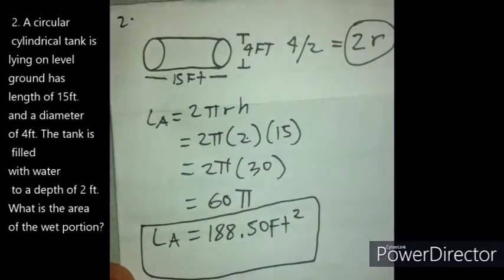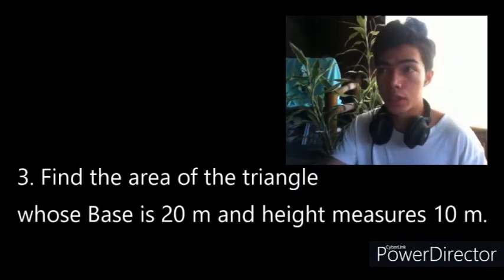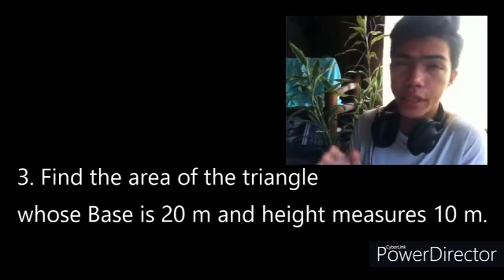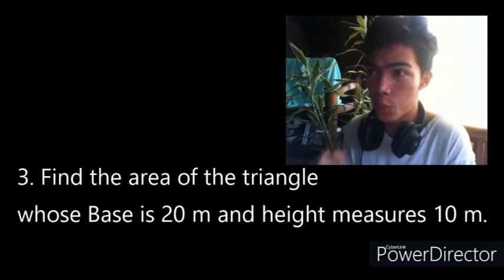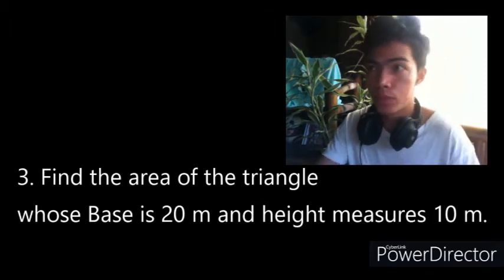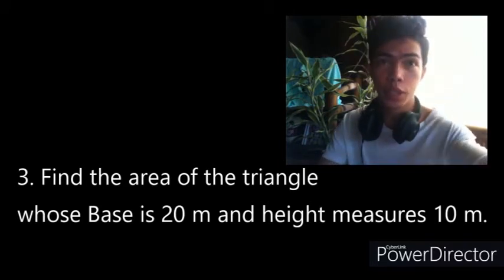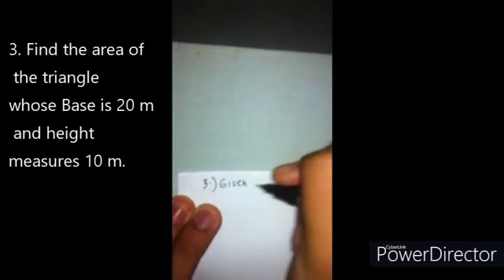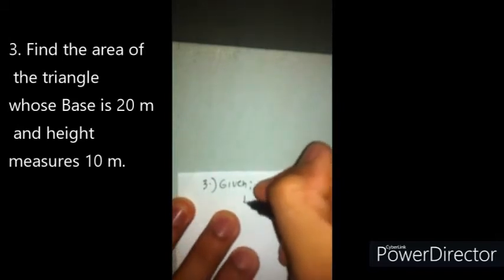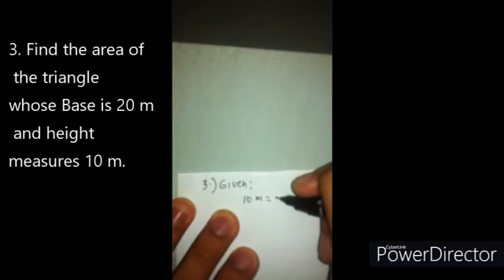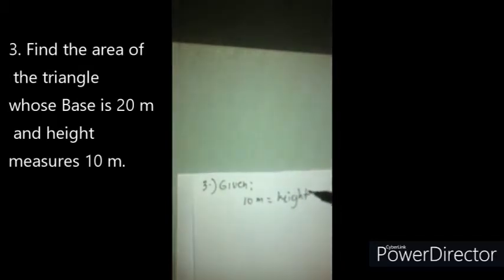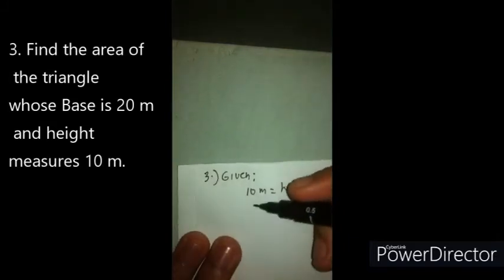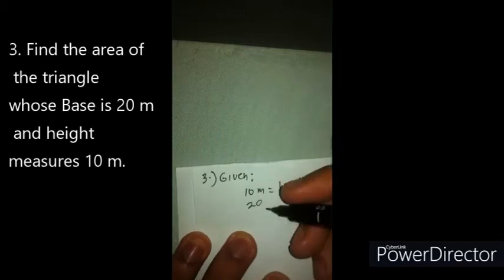For the third problem: find the area of the triangle whose base is 20 meters and height measures 10 meters. We're going to find the area of this triangle. The given for this problem: we have 10 meters for the height and 20 meters for the base.